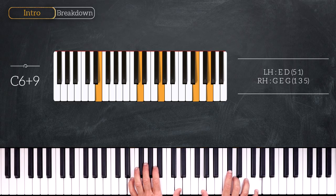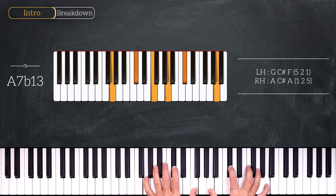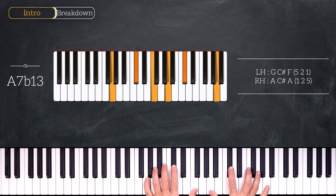Then right after we'll play this A7 flat 13. So we have G, C sharp, F on the left and A, C sharp, A on the right. Very nice.